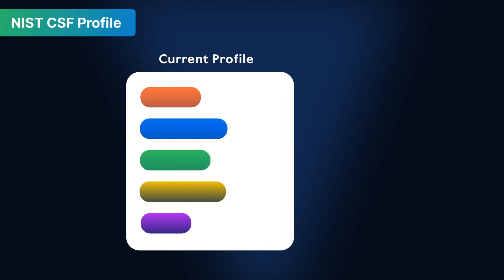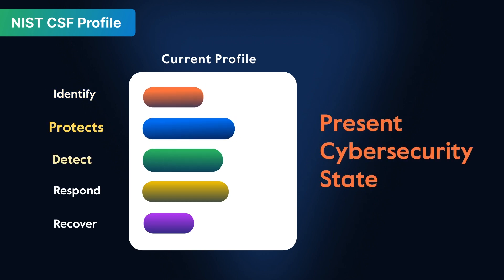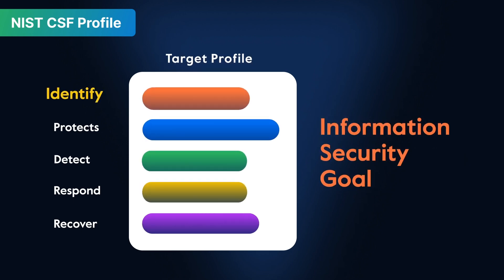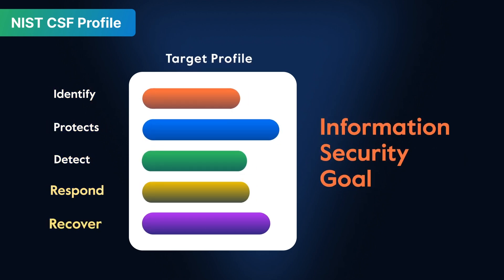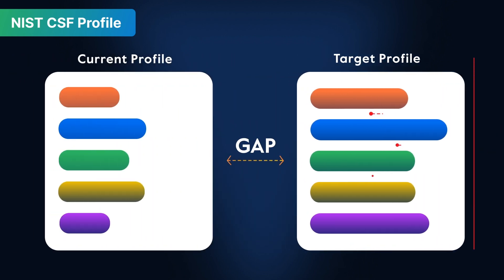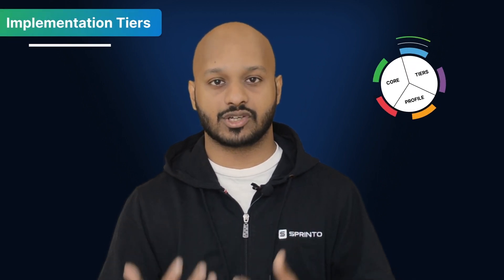The current profile indicates the cybersecurity outcomes that are currently being achieved — basically, where you stand from a cybersecurity standpoint today. The target profile represents the risk management goal of your information security team — that is, where you want to be down the road. The gap between the two determines the work you'll need to take up in order to be compliant. That brings us to CSF Implementation Tiers.